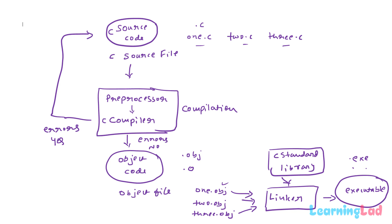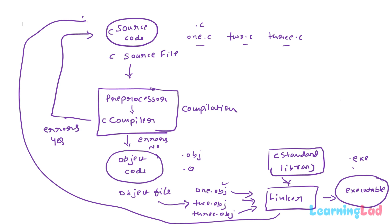We now have an executable file that can be executed on a computer. During the linking process, the linker may also find errors — for example, if you made mistakes while using features from the standard library, it will generate an error saying it can't link the files. In that case, you must go back to your source code, correct the error, and then perform the compilation and linking steps again.